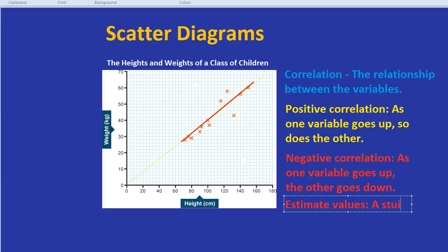So we're going to use our line of best fit to estimate values. A student has a weight of 54 kilograms. Estimate her height.